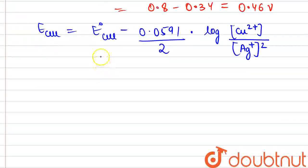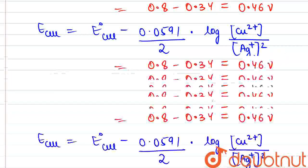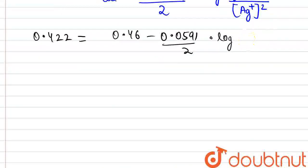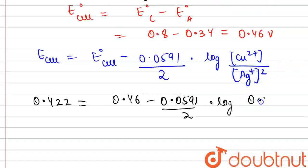Okay, now this E cell value is given to us clearly in the question as 0.422. 0.422 is equal to E° of the cell 0.46 minus 0.0591 divided by 2 into log of concentration going above. So, if we see that copper ion concentration is 0.10 molar, so we will put the copper ion concentration here as 0.10.